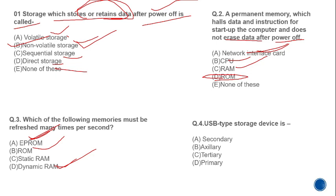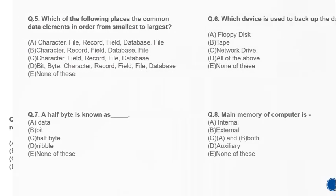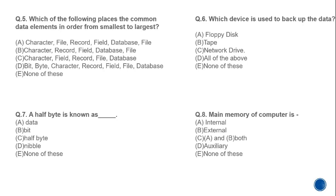MCQ 4: What type of storage is a USB drive? As discussed, USB drives are secondary memory devices. The correct answer is secondary memory — not auxiliary, not primary.